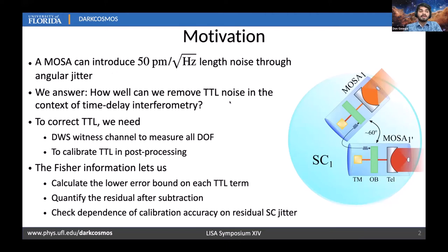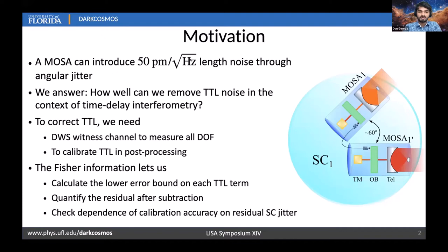For the motivation: if a MOSA jitters, it can introduce up to 50 picometers per root-hertz of length noise, as shown here. The question we wish to answer is how well we can remove tilt-to-length noise in the context of time delay interferometry. To correct TTL, we need the DWS witness channels to measure how the angles change for all degrees of freedom. Using these witness channels, we can calibrate TTL and remove it in post-processing. We answer this quantitatively using Fisher information, which lets us calculate the lower error bound on each tilt-to-length term, quantify the residual after subtraction, and check how it depends on the residual spacecraft jitter model considered.